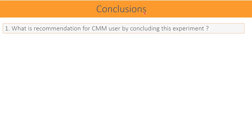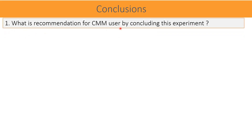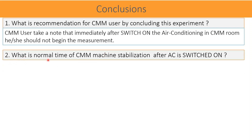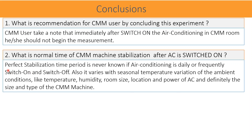Conclusions — Question 1: What is the recommendation for CMM users concluding from this experiment? Answer: CMM users should note that immediately after switching on the air conditioning in the CMM room, they should not begin measurements immediately. Question 2: What is the normal stabilization time of a CMM machine after AC is switched on? Answer: Perfect stabilization time is never known if air conditioning is daily or frequently switched on and off. It also varies with seasonal temperature variation, ambient conditions like temperature, humidity, room size, location, and power of air conditioning.